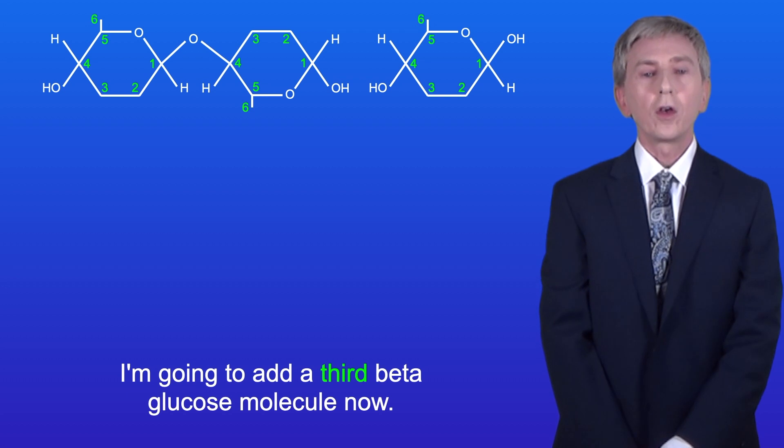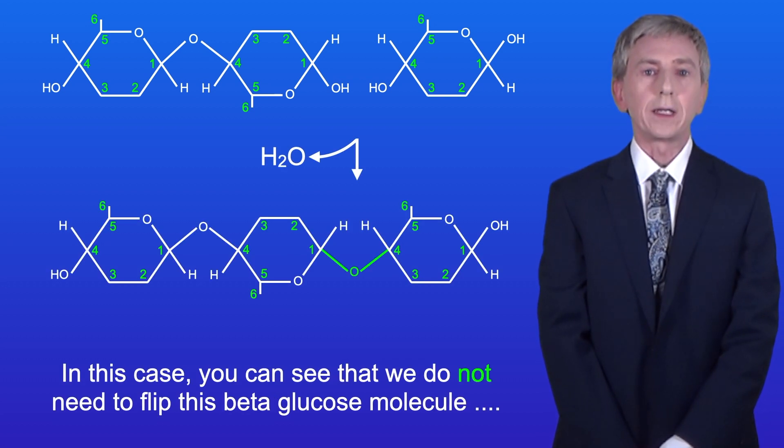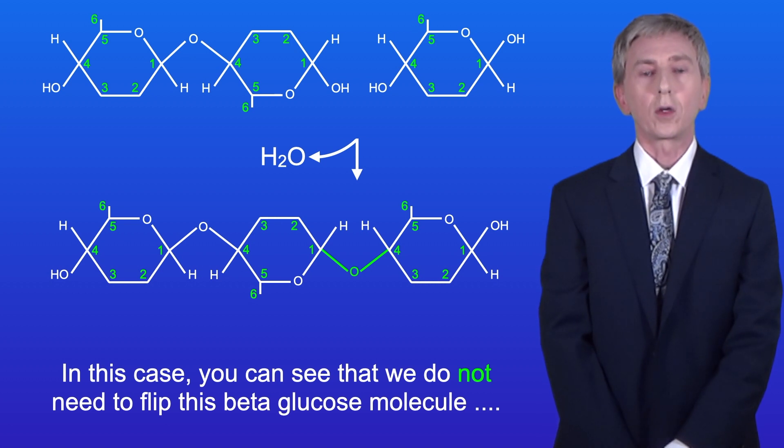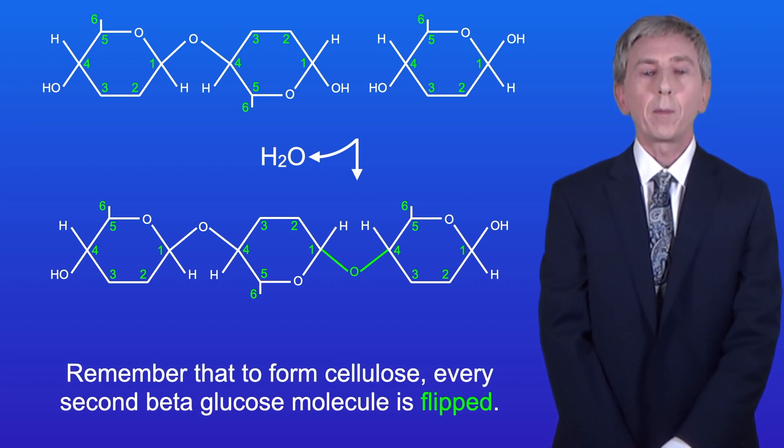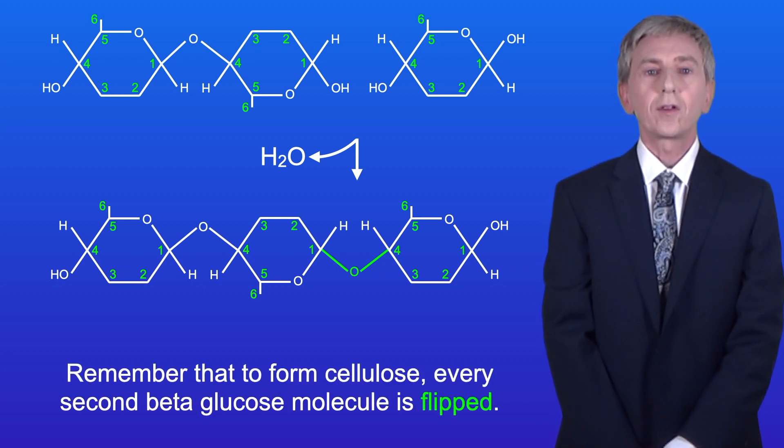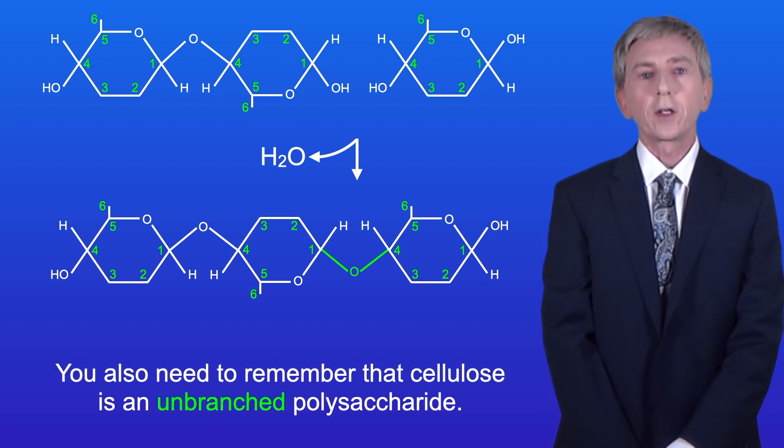I'm going to add a third beta glucose molecule now. In this case you can see that we do not need to flip this beta glucose molecule to form a glycosidic bond between carbon one and carbon four. So remember that to form cellulose, every second beta glucose molecule is flipped. You also need to remember that cellulose is an unbranched polysaccharide.